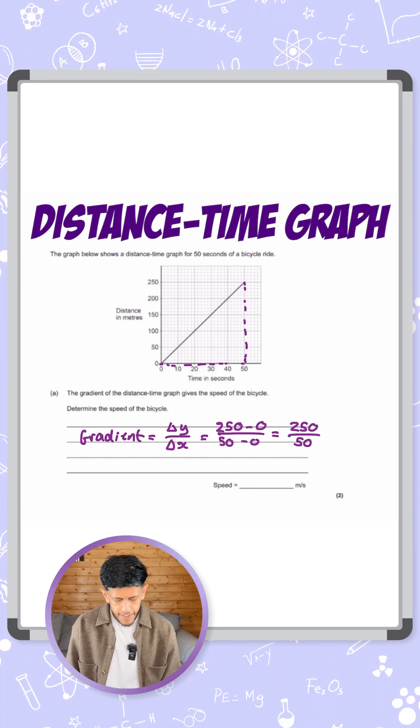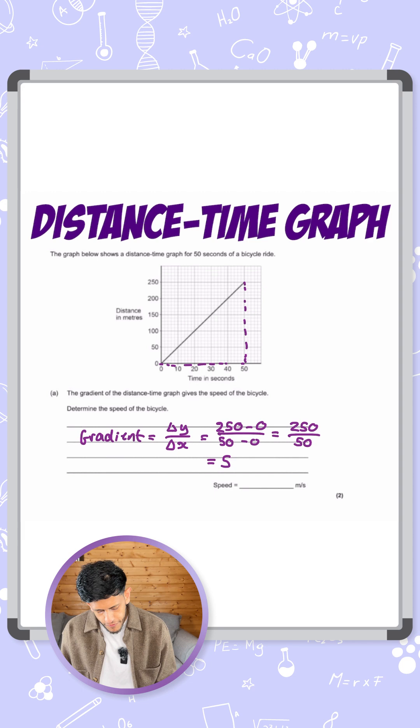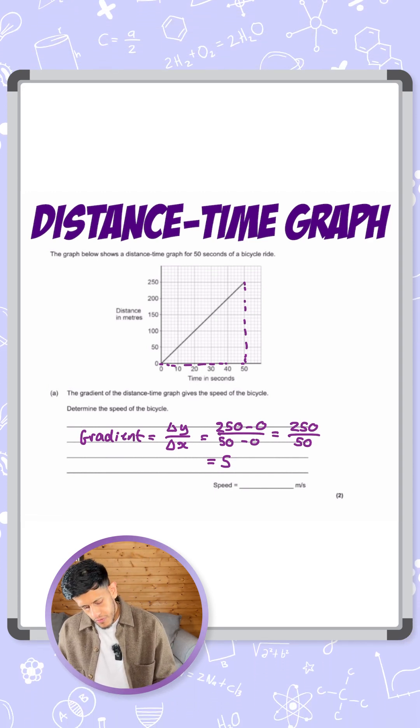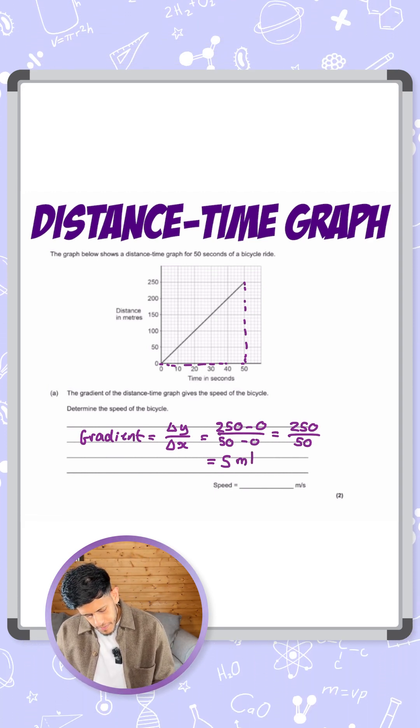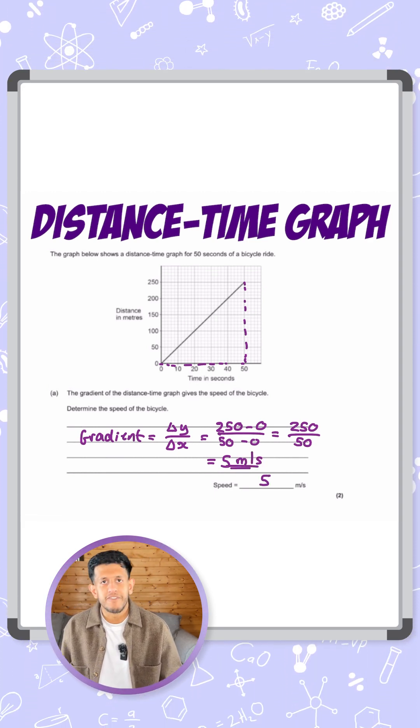250 divided by 50 gives us a value of five, and we know that the gradient gives us speed. So therefore, the units for this are meters per second. So our answer is simply five meters per second.